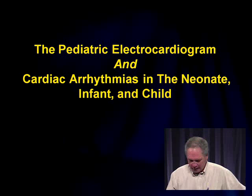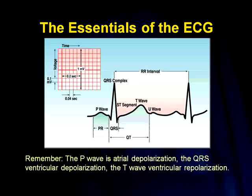Let's begin with the very basics. The P wave represents atrial depolarization, the QRS complex represents ventricular depolarization, and the T wave is ventricular repolarization. Remember, each little box on the EKG strip is 0.04 seconds or 40 milliseconds, and the big box distance is 0.2 seconds.